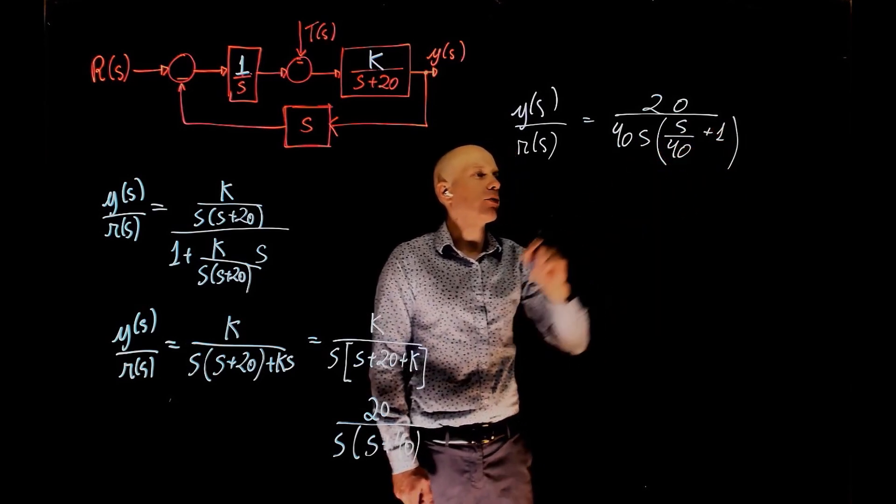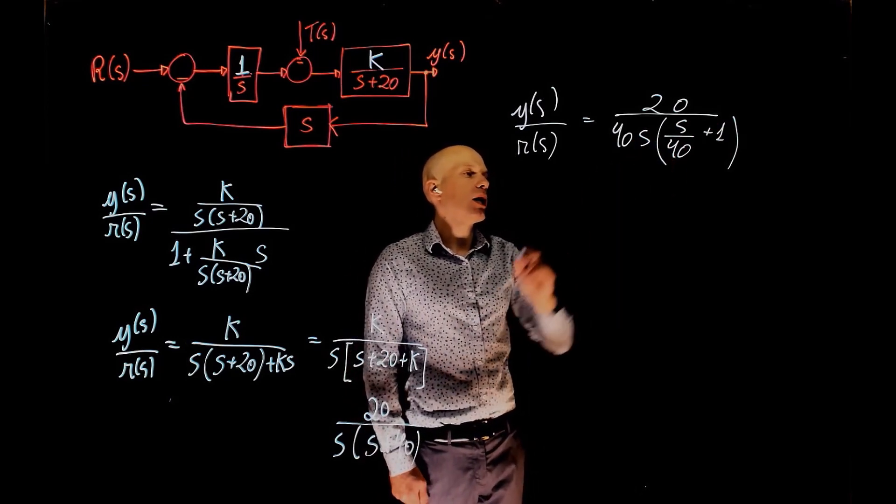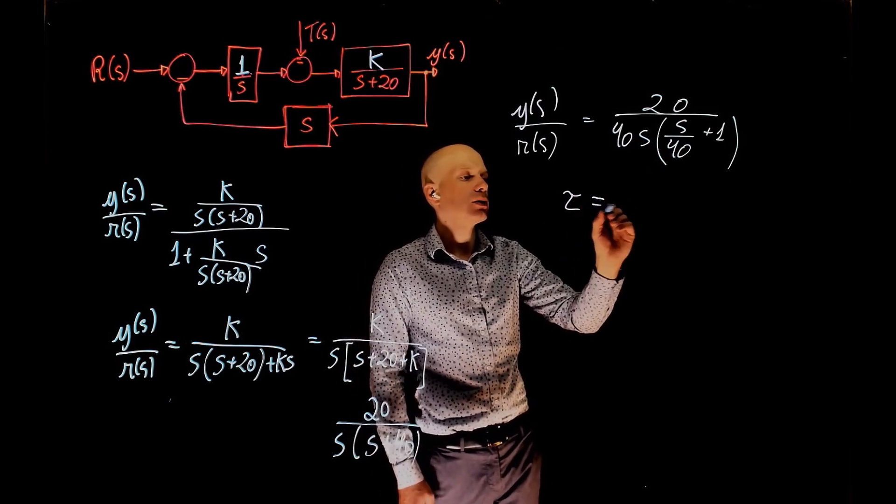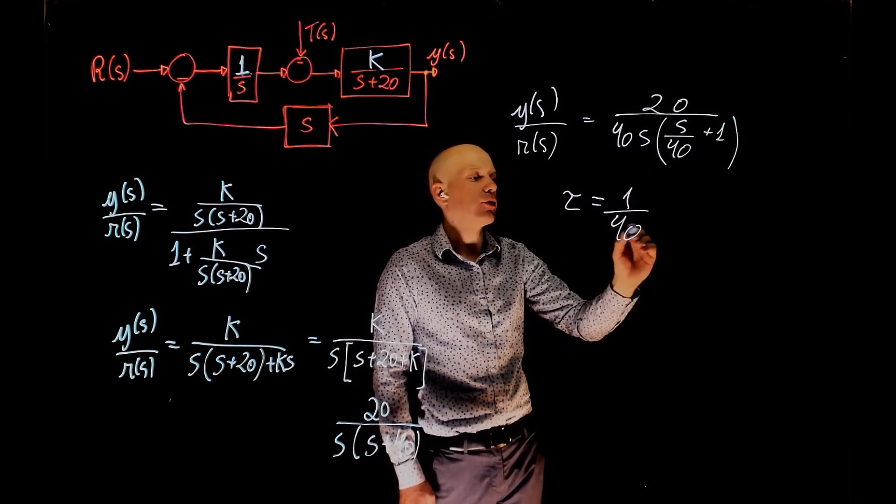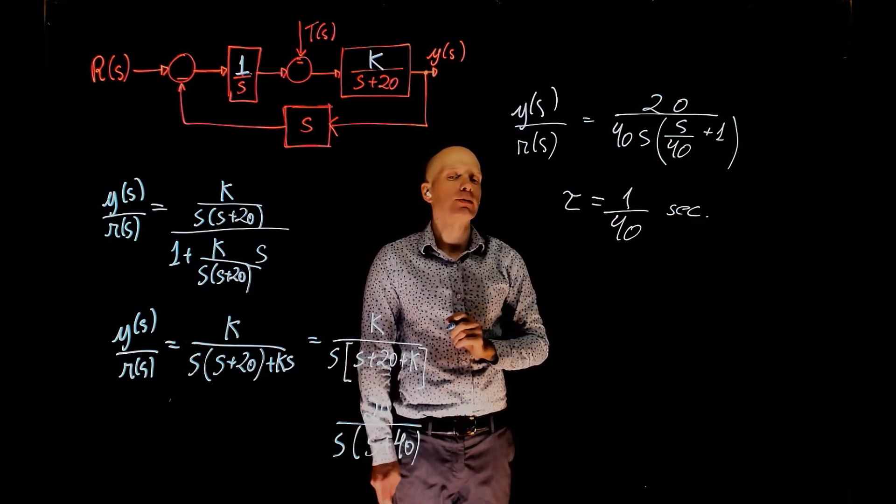Now, this is the standard form for a first order transfer function. And what multiplies s in this case is tau, the time constant, and that is simply 1 over 40 seconds. And that's the answer to the first part of the question.